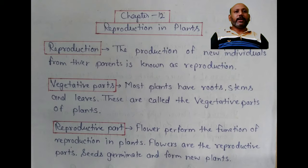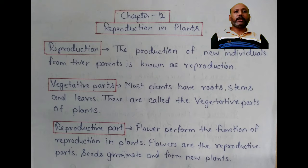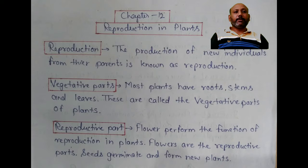Some plants have vegetative parts. Most of the plants have roots, stems and leaves — these are called the vegetative parts of the plants. Flowers perform the functions of reproduction in plants. The flowers are the reproductive parts, and seeds germinate to form new plants.